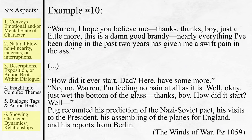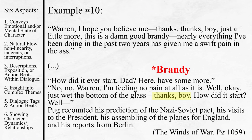Here's another example of great non-linear, broken-up, natural-sounding dialogue. "Warren, I hope you believe me. Thanks. Thanks, boy. Just a little more. This is a damn good brandy. Nearly everything I've been doing in the past two years has given me a swift pain in the ass. How did it ever start, dad?" "Here, have some more." "No, no, Warren. I'm feeling no pain at all as it is." "Well, okay. Just wet the bottom of the glass." "Thanks, boy." "How did it start? Well —" Pug recounted his prediction of the Nazi-Soviet pact, his visits with the president, his assembling of the planes for England, and his reports from Berlin. Take a look at how Wouk is using his em-dashes: here he sandwiches one bit of dialogue to make it an aside; here he uses one to convey the passage of time; and here he uses one to cut off the actual dialogue and summarize something the reader already knows but the other character does not. There are a lot of options for structuring your dialogue with punctuation, so try and hear the sound of the dialogue in your head, then figure out what punctuation best fits.